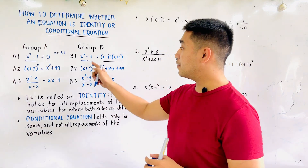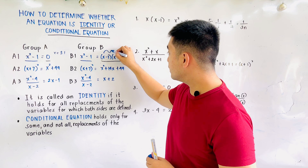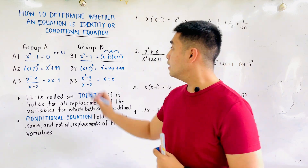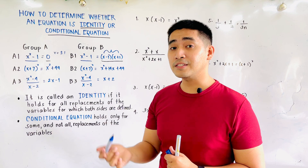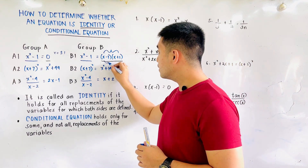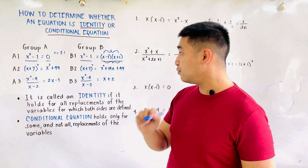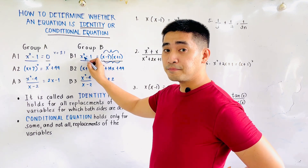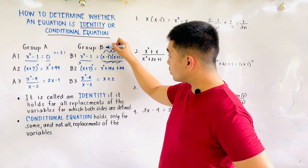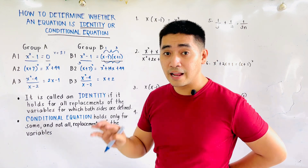For the second one, we are given x squared minus 1 is equal to the quantity x minus 1 times the quantity x plus 1. This is x minus 1 times the quantity of x plus 1. When we have x squared minus 1, it is difference of squares, and if you factor that out, this will be the form. If we substitute the value 2, this becomes 2 squared, 4 minus 1, so the left side becomes 3. If we have 2, this becomes 2 minus 1 which is 1, times 2 plus 1 which is 3. 1 times 3 is 3. Therefore, it is true for other values of x.